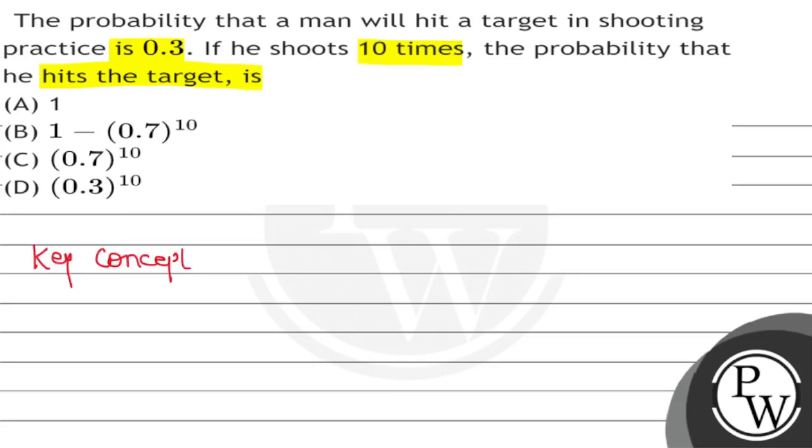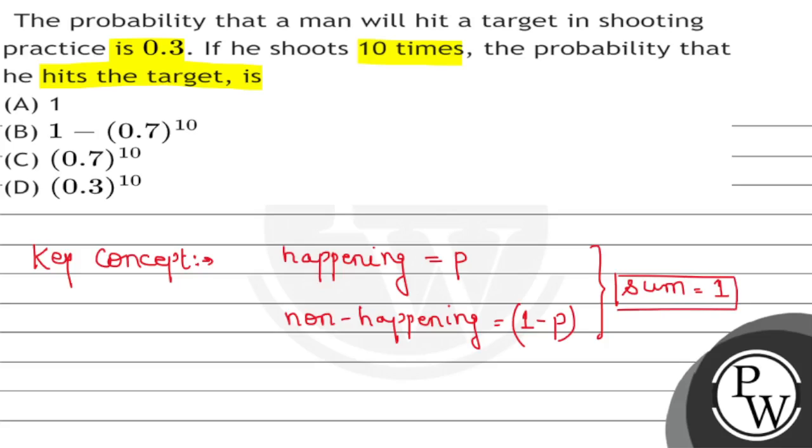If an event has a probability of happening p, then the probability of not happening is (1-p). The probability of non-happening - if I talk about it - the sum of any event's happening and not happening probability is the total probability, which is always less than or equal to 1.